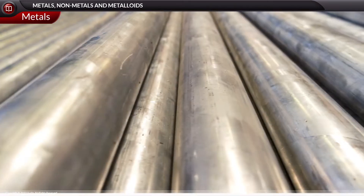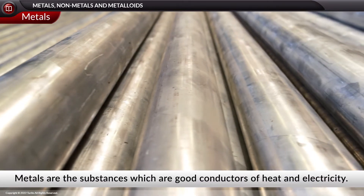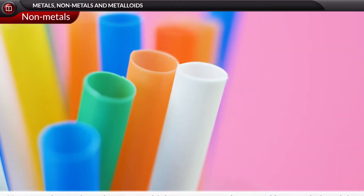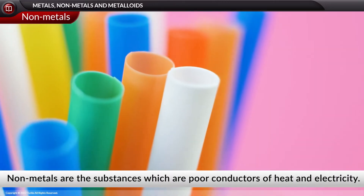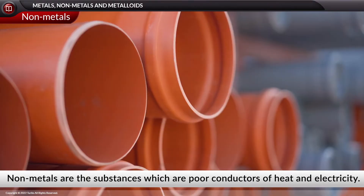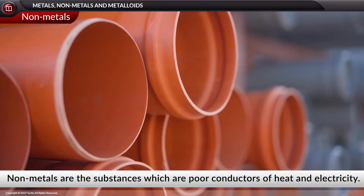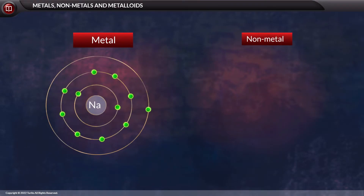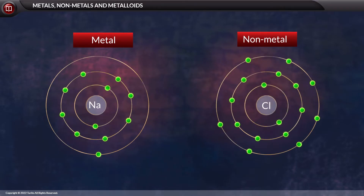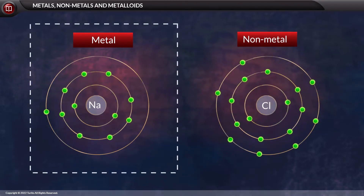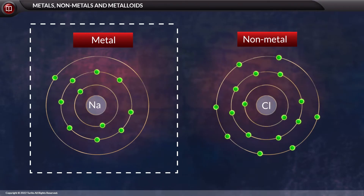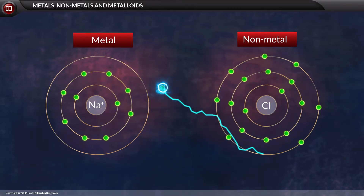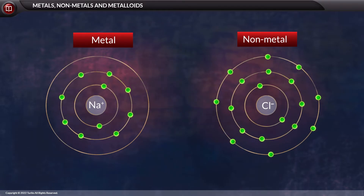In childhood, we studied that metals are substances that are good conductors of heat and electricity, and non-metals are substances that are poor conductors of heat and electricity. Now, let us learn about metals and non-metals in terms of electrons. Metals are the elements whose atoms can donate electrons, and non-metals are the elements that can accept electrons.